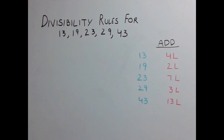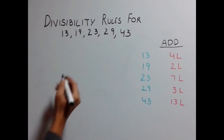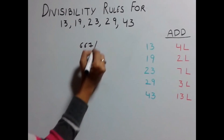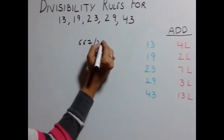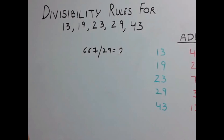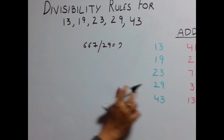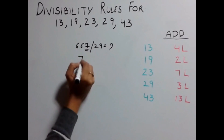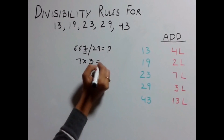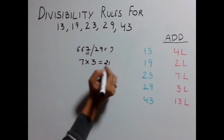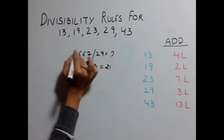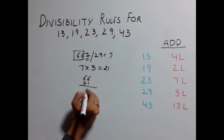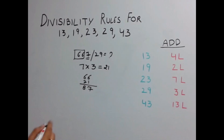Let's understand this with an example. Let's take 667 and find out whether it is divisible by 29 or not. For 29, you need to multiply the last digit by 3. Here the last digit is 7, so 7 × 3 gives you 21. Add this number to the remaining number: 66 + 21 gives you 87.